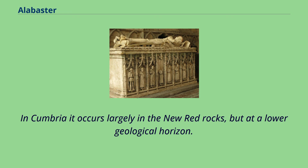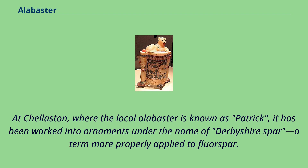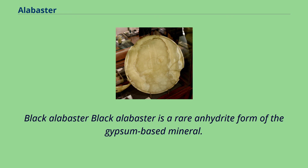The alabaster of Nottinghamshire and Derbyshire is found in thick nodular beds or floors, in spheroidal masses known as balls or bowls, and in smaller lenticular masses termed cakes. At Chellaston, where the local alabaster is known as Patrick, it has been worked into ornaments under the name of Derbyshire spar, a term more properly applied to fluorspar.